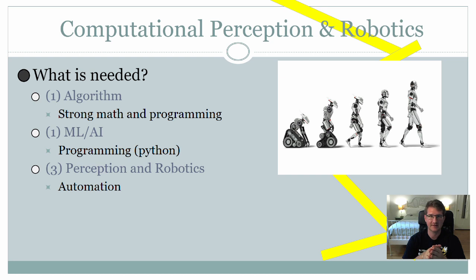The number of specialization classes depends on which specialization it is. For this one, you have one algorithm class, one machine learning slash AI class, and then you have your choice of three classes from a set of perception classes or robotics classes.